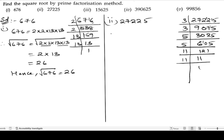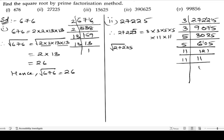Now we can write: 27225 equals 3 into 3 into 5 into 5 into 11 into 11. So the square root of 27225 equals the square root of 3 into 3 into 5 into 5 into 11 into 11.